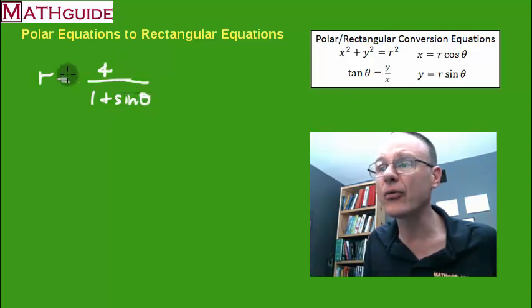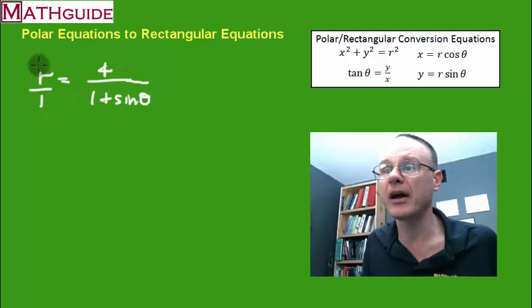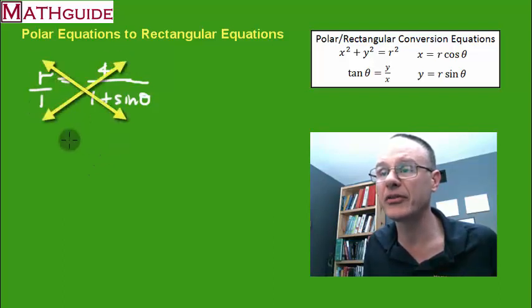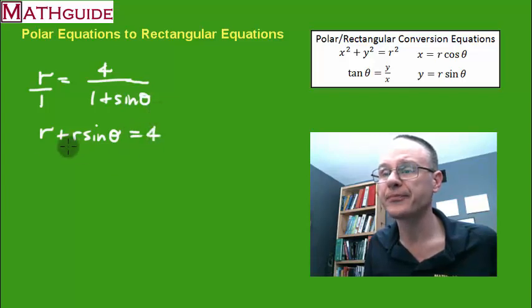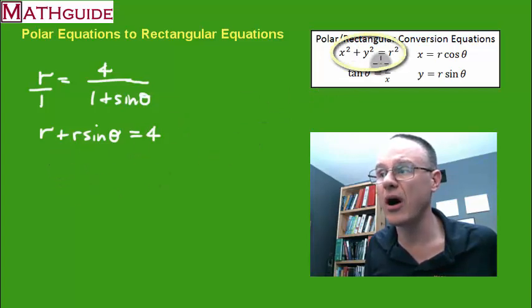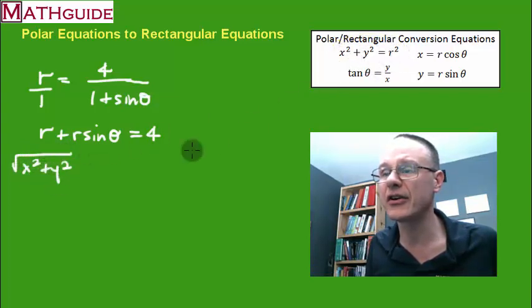We're going to put r equals 4 over 1 plus sine theta. So if I have the radius being defined by this fraction, I've got to figure out what the heck this thing really is. So like I did with the last problem, I eventually cross-multiplied. I'm going to do the same thing. So I'm going to get r times 1, I'm going to get r times the sine of theta. I just multiply r times that whole denominator, and 1 times 4 is 4.